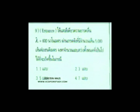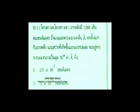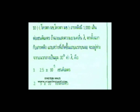แถบสว่าง 7 แถบเป็นคำตอบครับ ถ้าถามแถบมืดก็จะ 6 เส้น คำนวณอย่างนี้นะครับ ต่อไปโจทย์ข้อสอง เกรติ้งมี 1,000 เส้นต่อเซนติเมตร ถ้าใช้แสงความยาวคลื่น Lambda ตกตั้งฉากกับเกรติ้ง แถบสว่างแรกที่เกิดขึ้นบนจอจะอยู่ห่างจากแนวกลางทำมุม 30 องศา ค่า Lambda เป็นเท่าไหร่